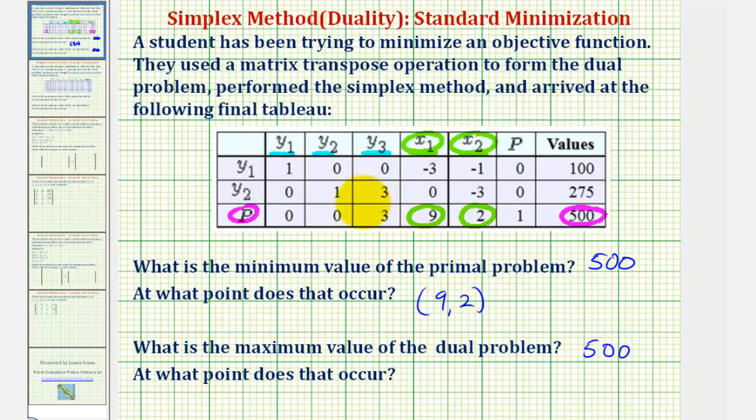All of the inactive or non-basic variables are set equal to zero. I say active variables, but some sources say basic variables instead. Notice that y sub one equals 100, y sub two equals 275, and y sub three is inactive, so y sub three equals zero.